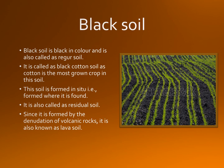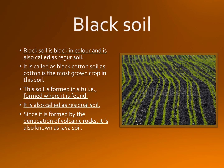Black soil is black in color and is also called as Regar soil. It is taken from a Telugu word called 'ragada' meaning rich loam soil of India. It is called as black cotton soil as cotton is the most grown crop in this soil. This soil is formed in-situ, that is, it is formed where it is found.